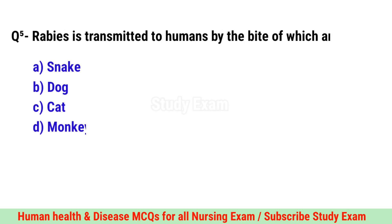Question No. 5. Rabies is transmitted to humans by the bite of which animal? Correct option is B. Dog.